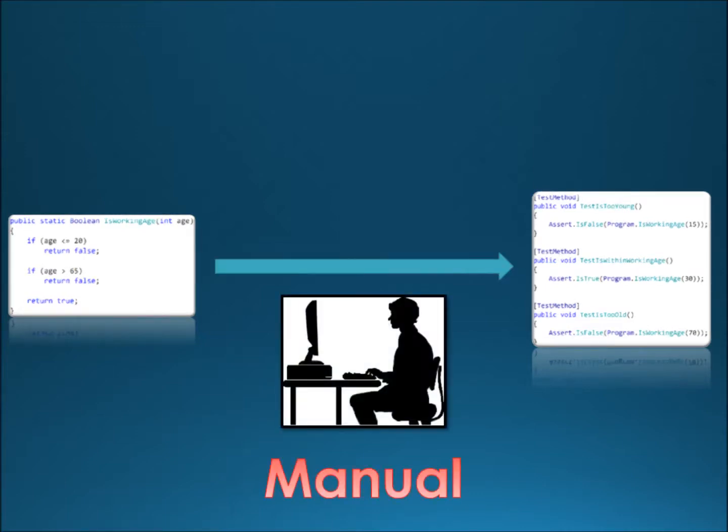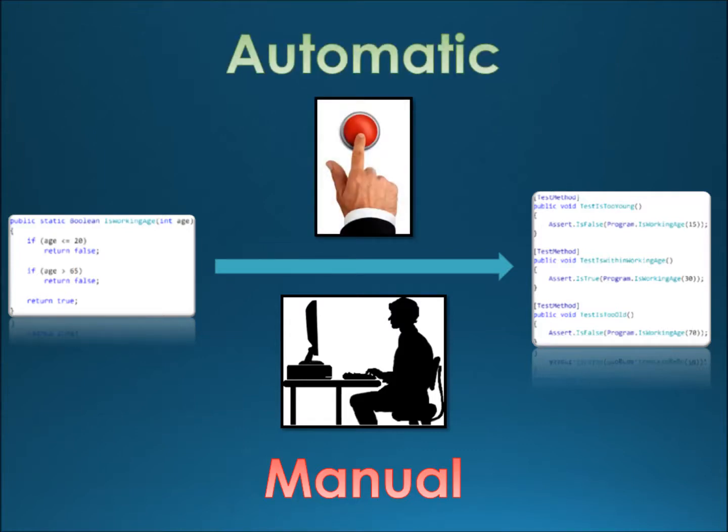However, maybe we could generate the tests automatically with a push of a button. Automatic test generation is a very important challenge in software engineering research because the benefits could be huge. It is estimated testing and debugging constitute over half of entire development costs and automatic test generation has a potential of reducing these costs by an order of magnitude.